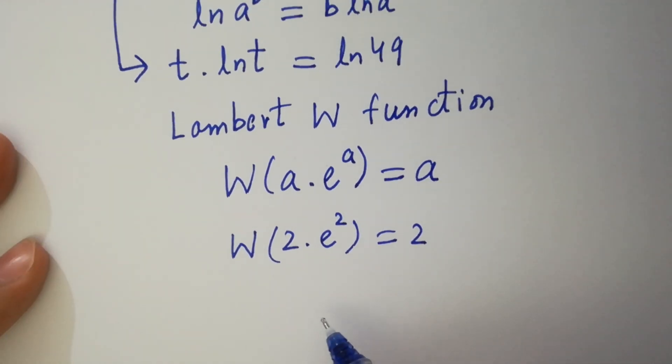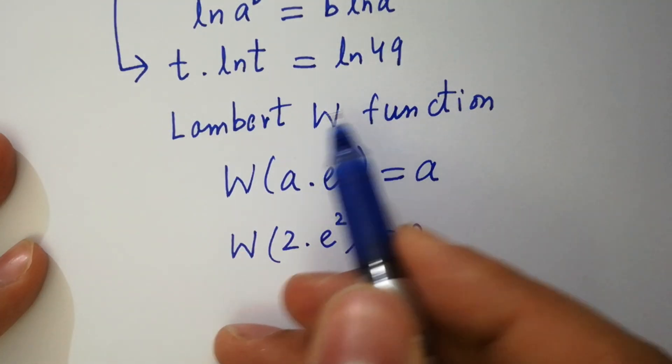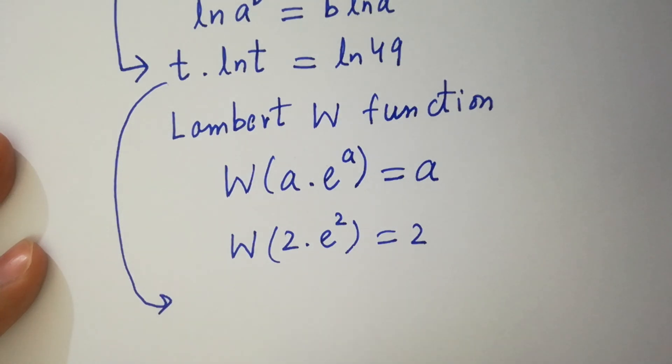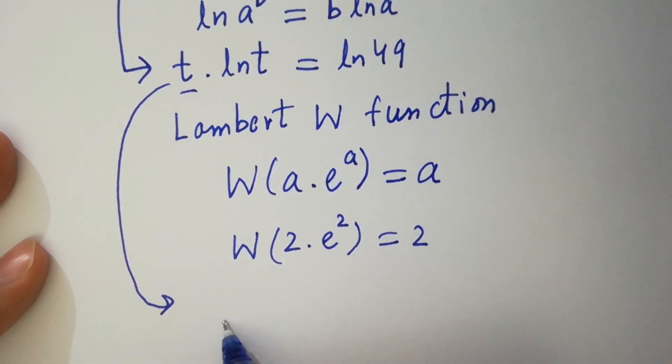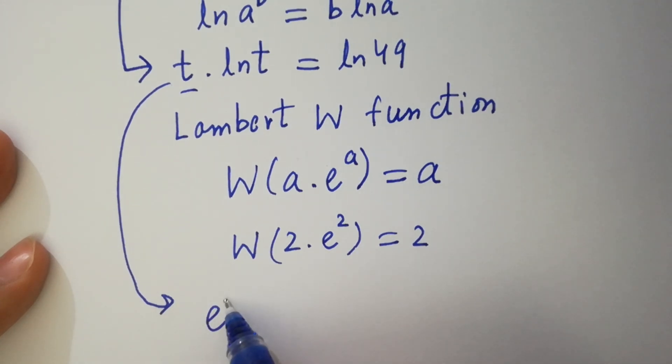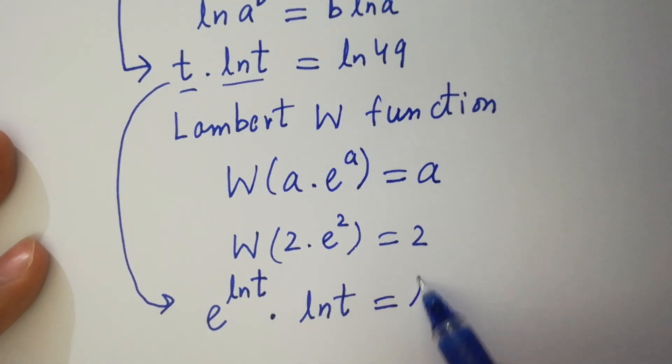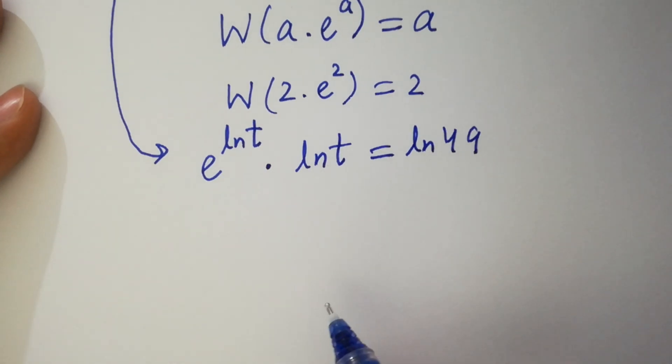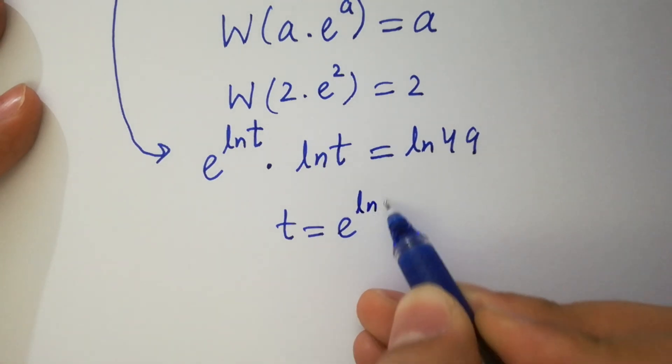So here t ln t equals ln 49 can be written as e to the power ln t times ln t as it is, equal to ln 49, as t equals e to the power ln t.